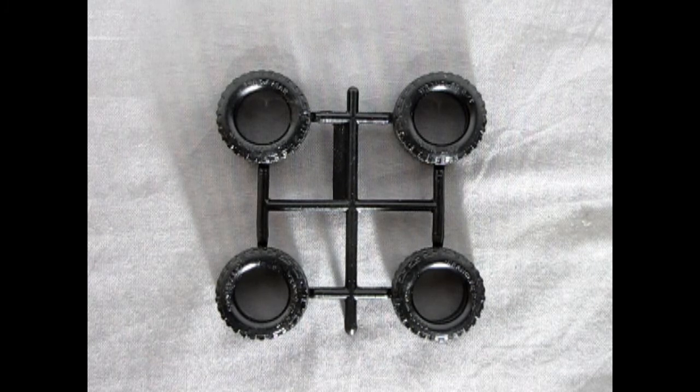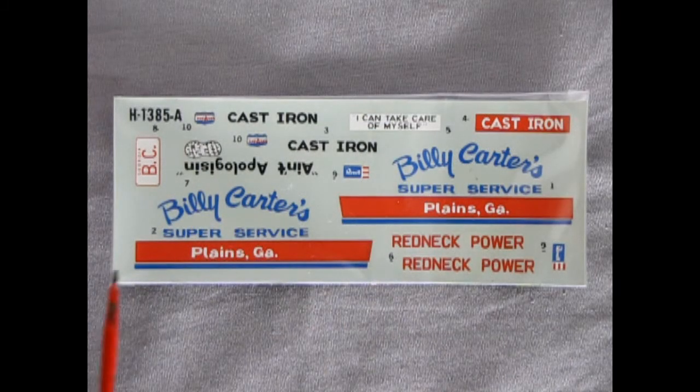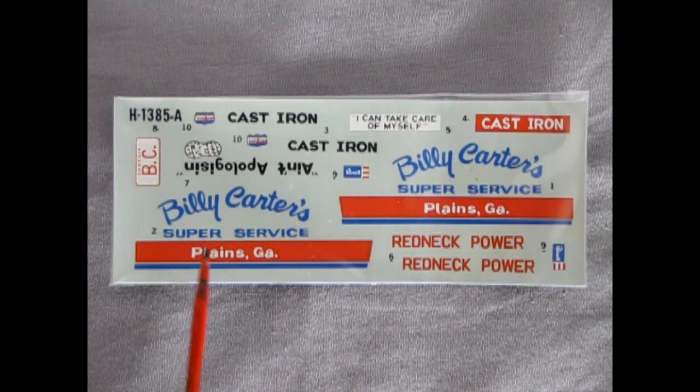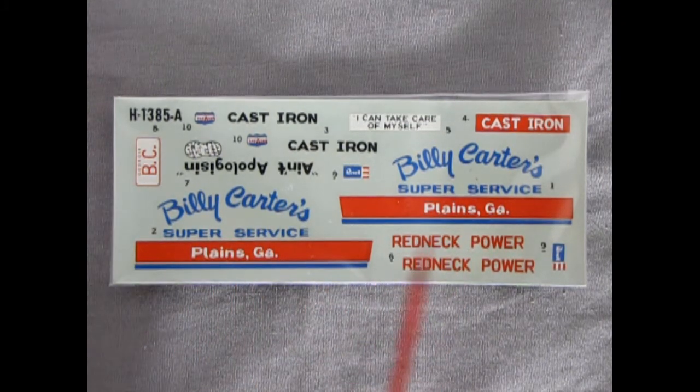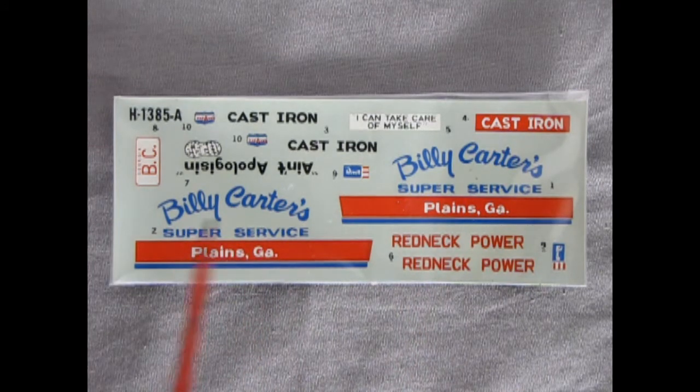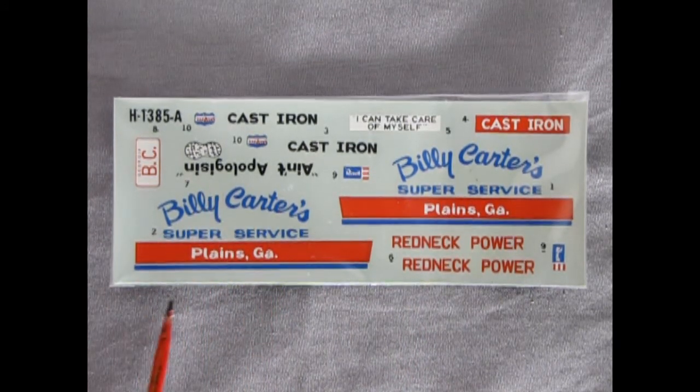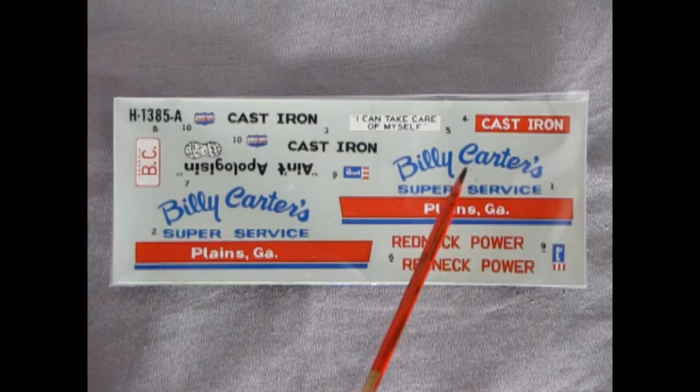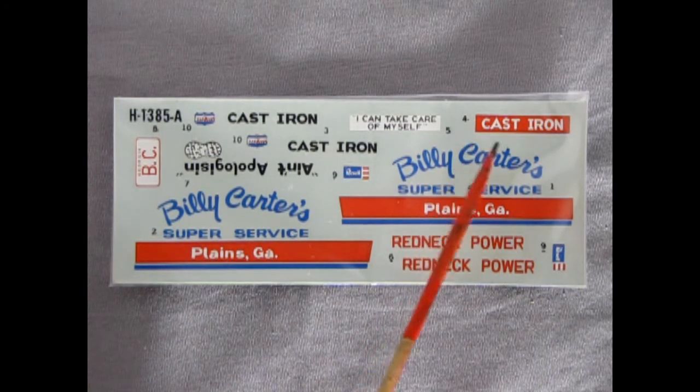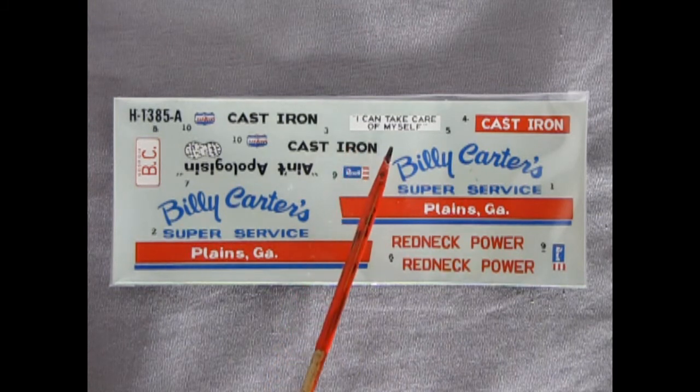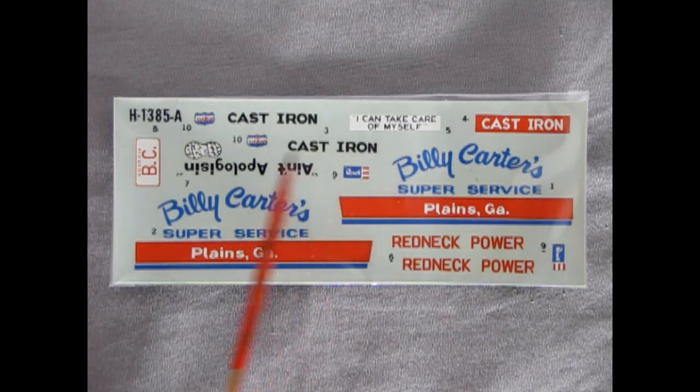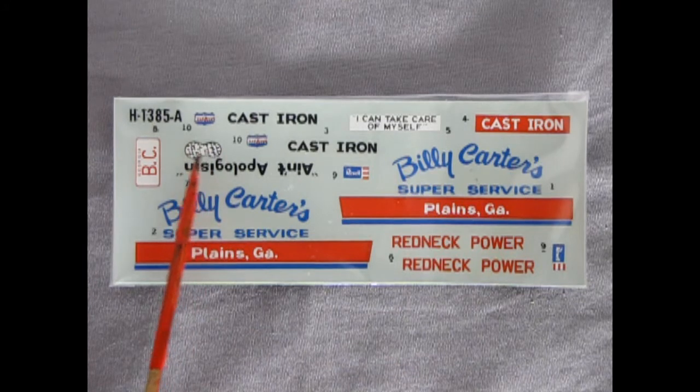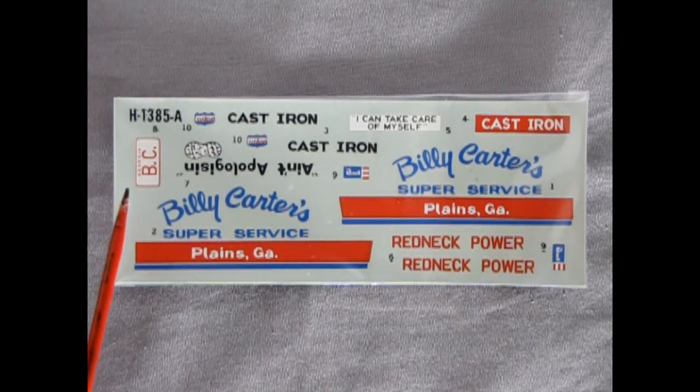Finally we've got this wonderful looking decal sheet from Billy Carter's Redneck Power pickup, and as you can see the color registration on this is really quite nice. Of course, Billy Carter ain't apologizing. And there's the Billy Carter Super Service decal which goes on the side. It's got Redneck Power. I do believe his CB handle was Cast Iron, and it does say I can take care of myself, which was a Billy Carter saying. We also have the peanut on here, which I do believe is a reference to his brother Jimmy. And then there's a BC for Billy Carter.